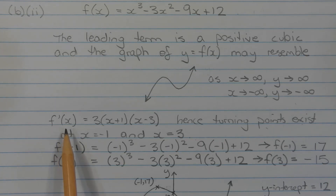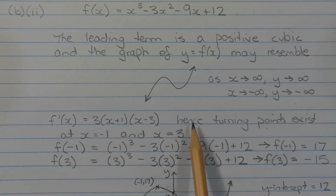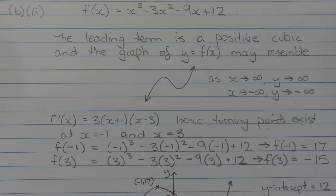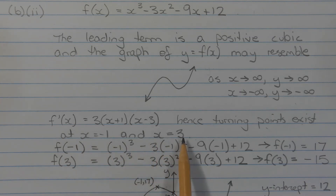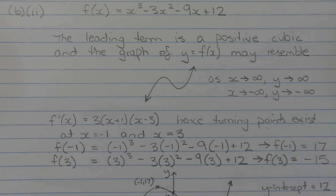Since f'(x) is given as 3 times (x plus 1) times (x minus 3), turning points exist at x equals negative 1 and x equals 3. There's no need to re-differentiate f(x). Substituting these values gives f(negative 1) equals 17 and f(3) equals negative 15.